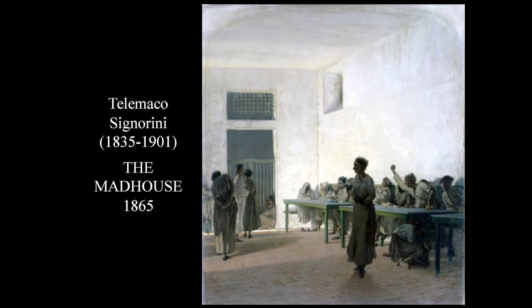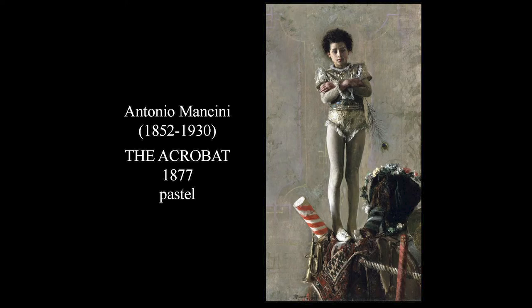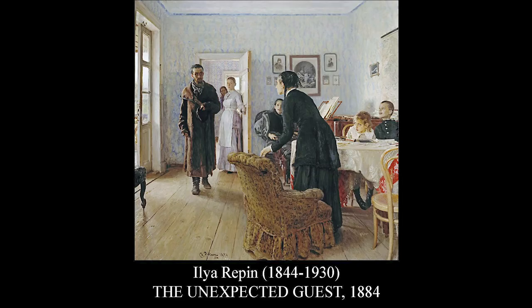Realism began to spread throughout Europe. This is an Italian painting by Telemaco Signorini, the leading figure of the Macchiaioli — a group of young Italian artists that rebelled against the academy and decided to paint everyday street scenes and people. In this case, Signorini went into a madhouse and painted what he saw. Another wonderful Italian realist is Antonio Mancini — this is done in pastel, a highly detailed, carefully observed, beautifully lit painting of a young man who's an acrobat. Again, there's no message here; it's just a scene the artist found beautiful and interesting and decided to record.